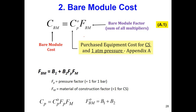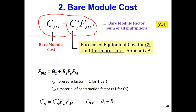The bare total modulus is something similar to the Lang factor equation, but it considers the effect of pressure and material of construction. For bare modulus, it tells us that the total cost of the equipment — including installation and labor altogether — is the cost of the equipment at ambient pressure and carbon steel at one atmosphere, times the bare module factor. The bare module factor considers the effect of pressure and material of construction.